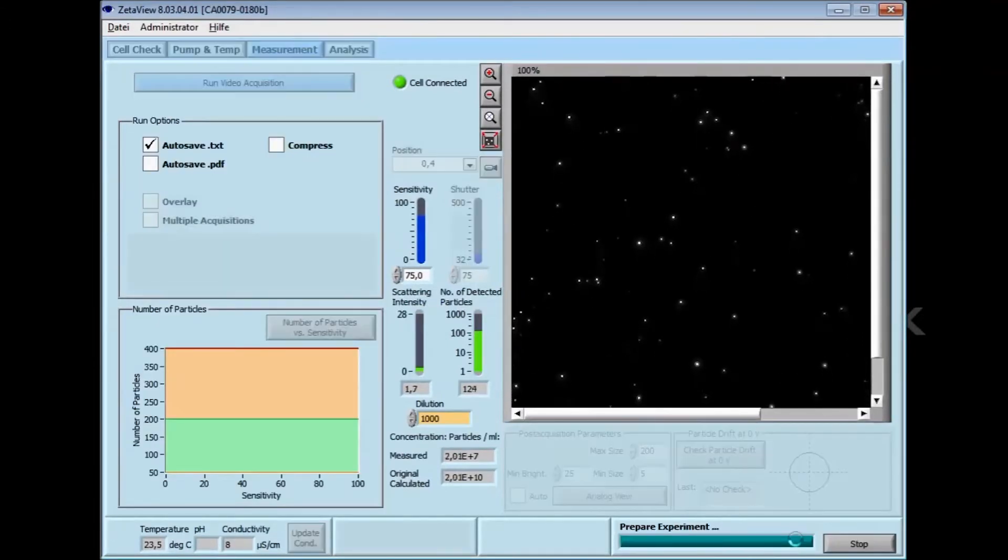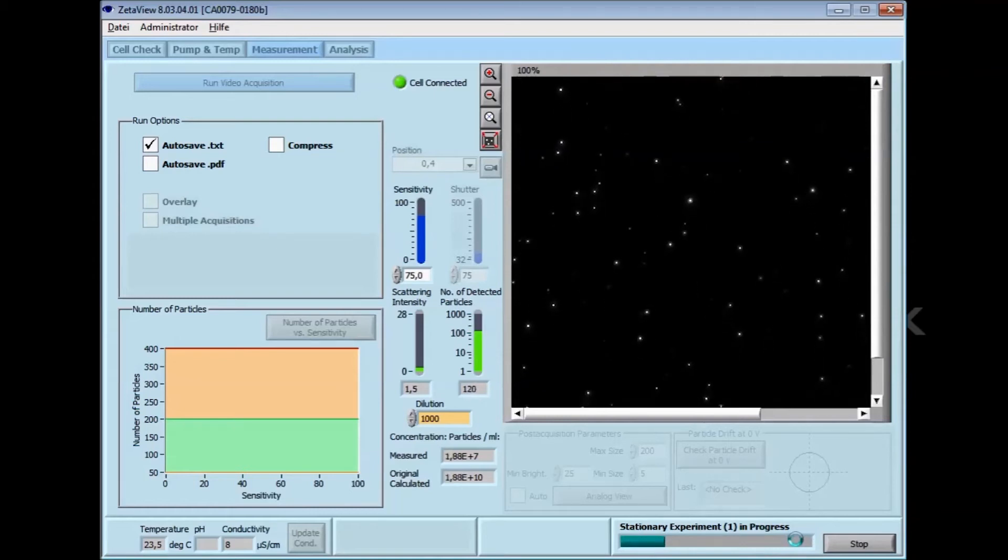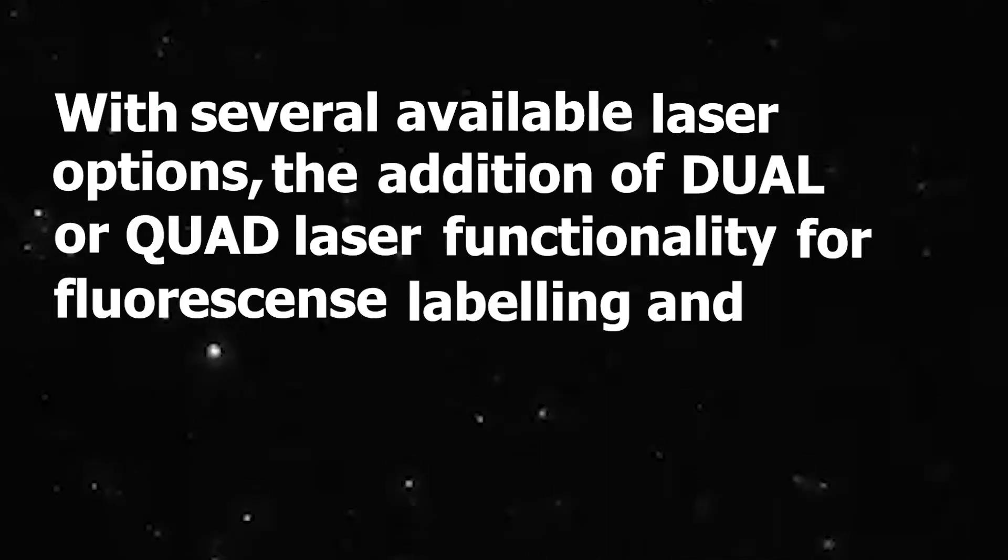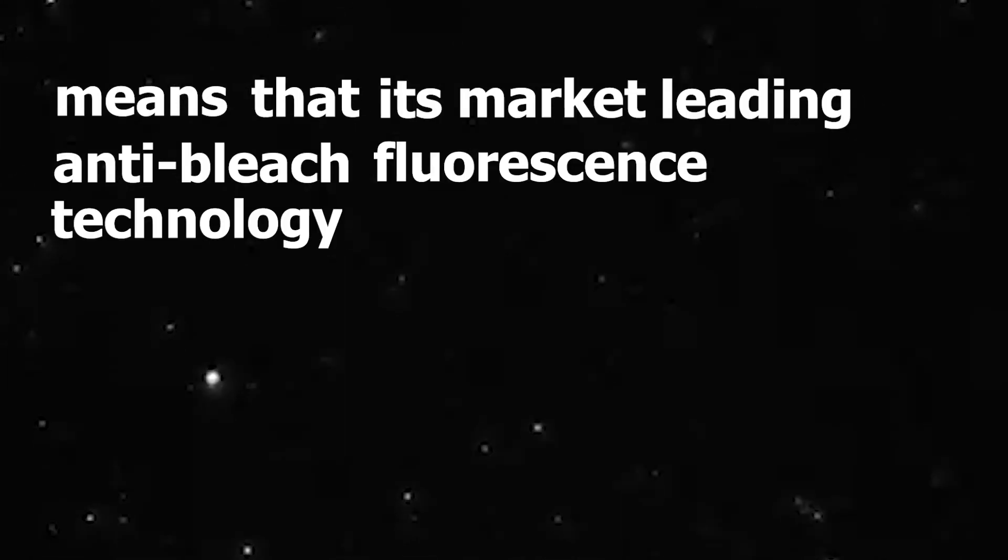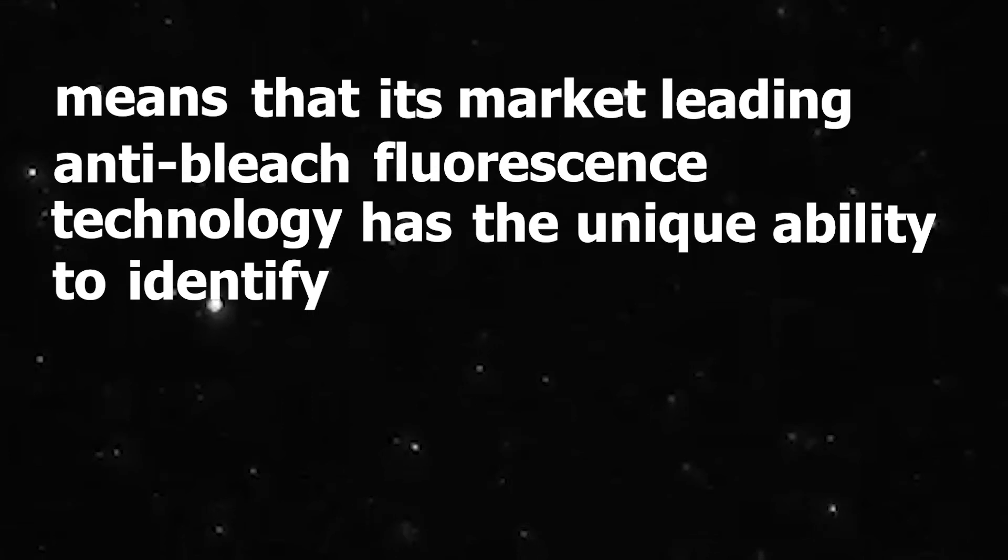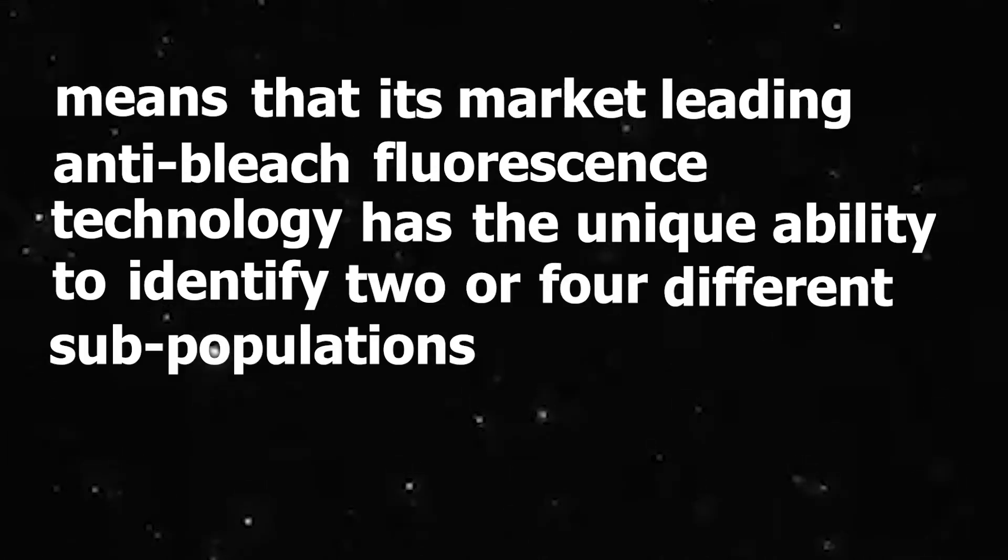These parameters can be measured both in scattering mode and fluorescence mode for the determination of fluorescently labeled subpopulations. The ZetaView can measure particle size between 20 nanometers and 1000 nanometers, dependent on sample and laser. With several available laser options, the addition of dual or quad laser functionality for fluorescence labeling and multi-wavelength excitation means that its market-leading anti-bleach fluorescence technology has a unique ability to identify two or four different subpopulations in quick succession, without the need to manually change lasers.